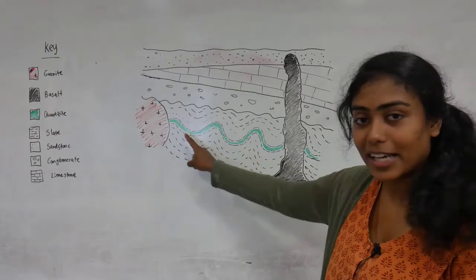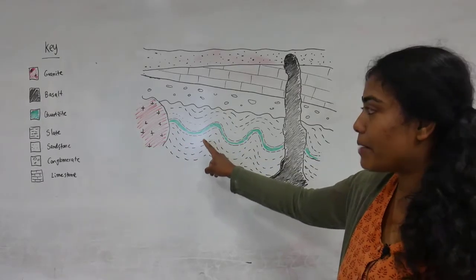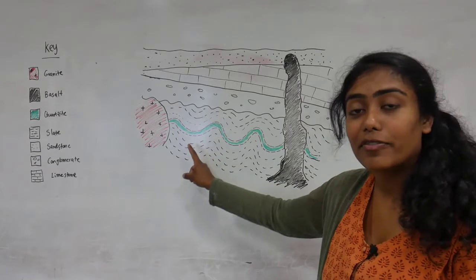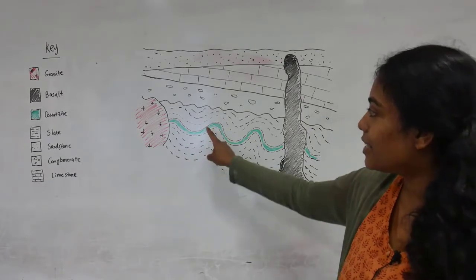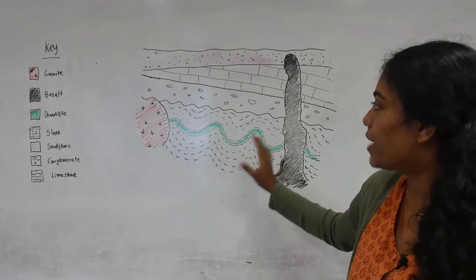Then we have this quartzite layer, and that might have started off as a sandstone with lots of quartz clasts in it, and then we have more mudstone on top of that.